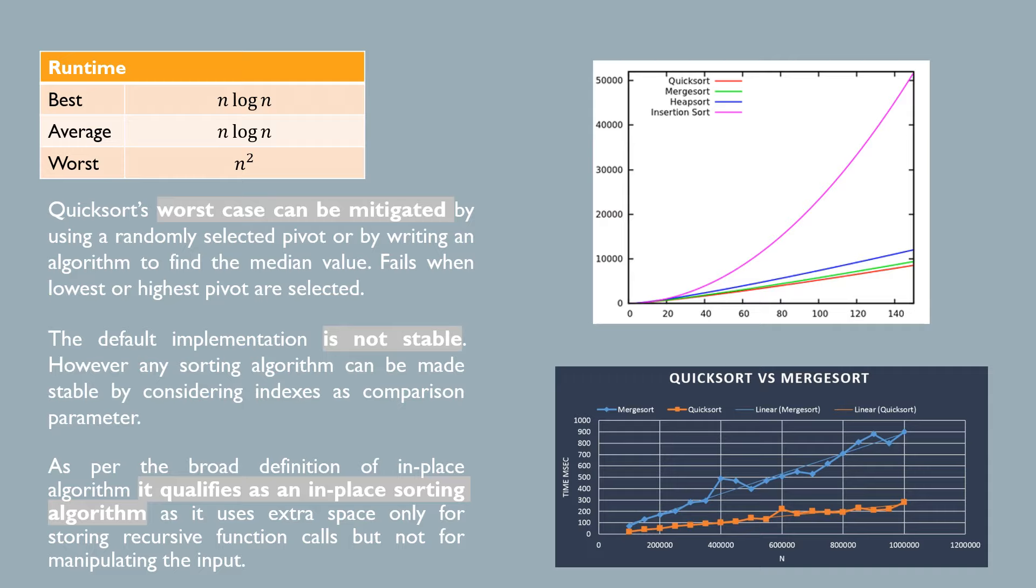However, for randomly shuffled datasets, assuming there isn't a poor choice of pivot, Quicksort is the optimal choice.